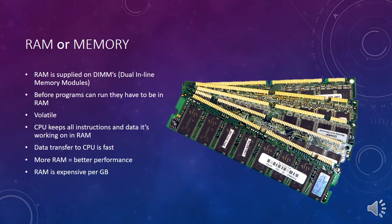RAM, or memory, is another component installed on the motherboard. RAM is supplied in little cards — small green cards with gold connectors on the edge. These are DIMMs, which stands for dual inline memory module, because there are chips and connectors on both sides of the card. Before programs can run they have to be loaded into RAM, taken from storage — your hard disk drive or solid state drive — so that the CPU can access the next instruction.